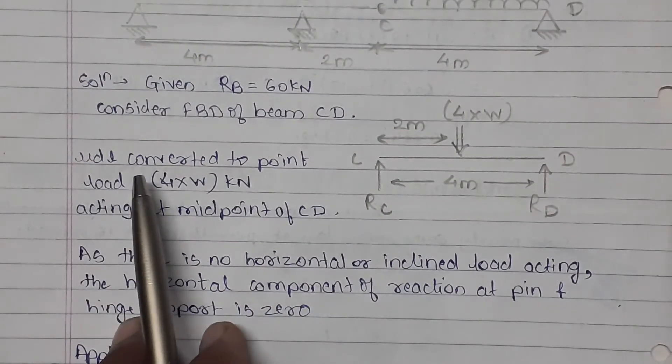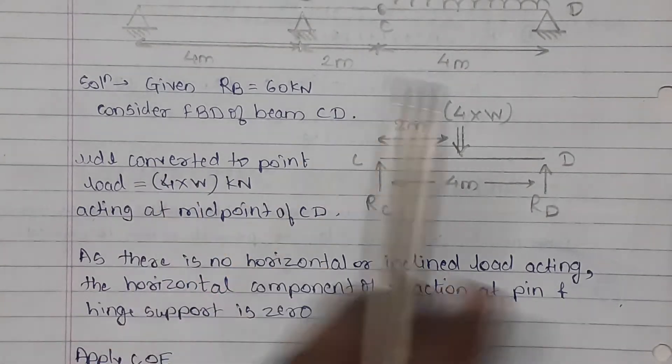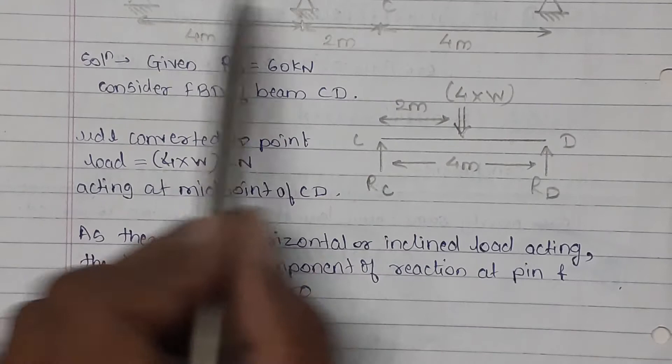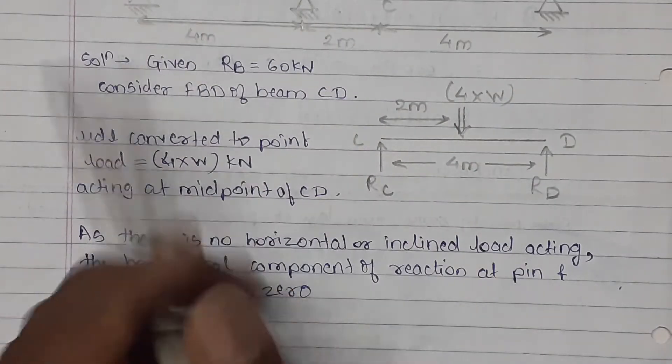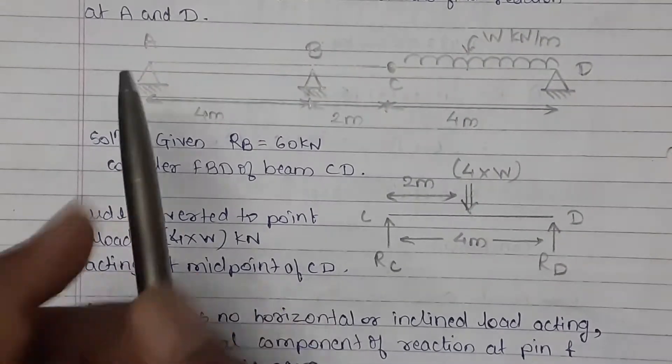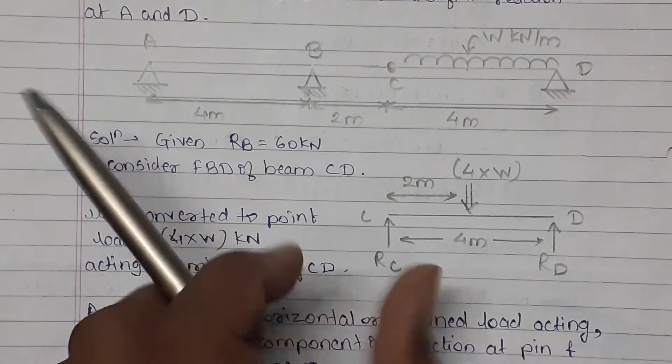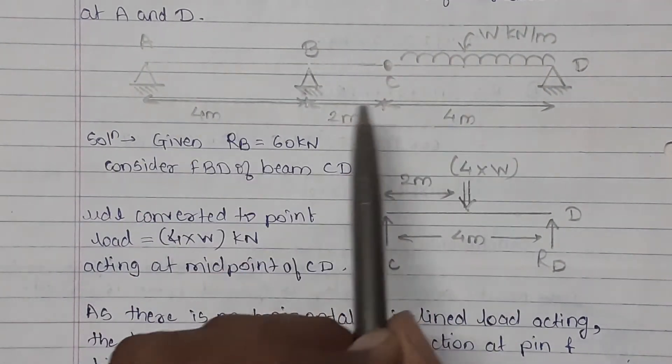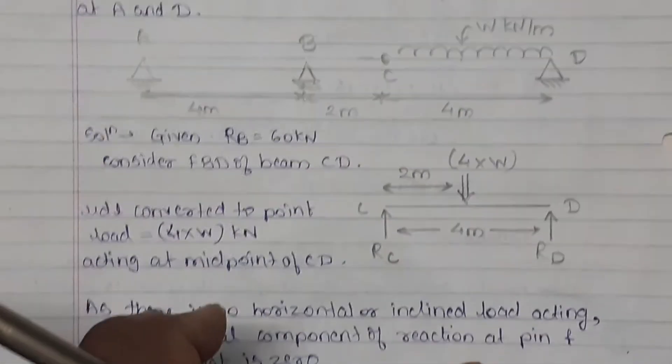So first, FBD of beam CD is drawn. Here this beam consists of three hinge supports. If we will consider total figure A, B and D, at these three locations there are hinge supports. We will observe that in this figure there is no any horizontal or inclined load.